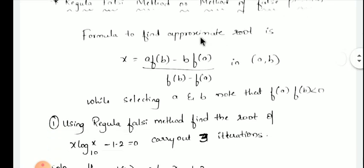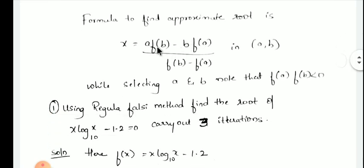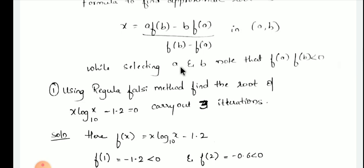To find this method, we have to use this formula: x is equal to a into f(b) minus b into f(a), divided by f(b) minus f(a), in the interval [a, b]. And like how we are selecting in the previous method, a and b are selected such that f(a) into f(b) must be less than 0.